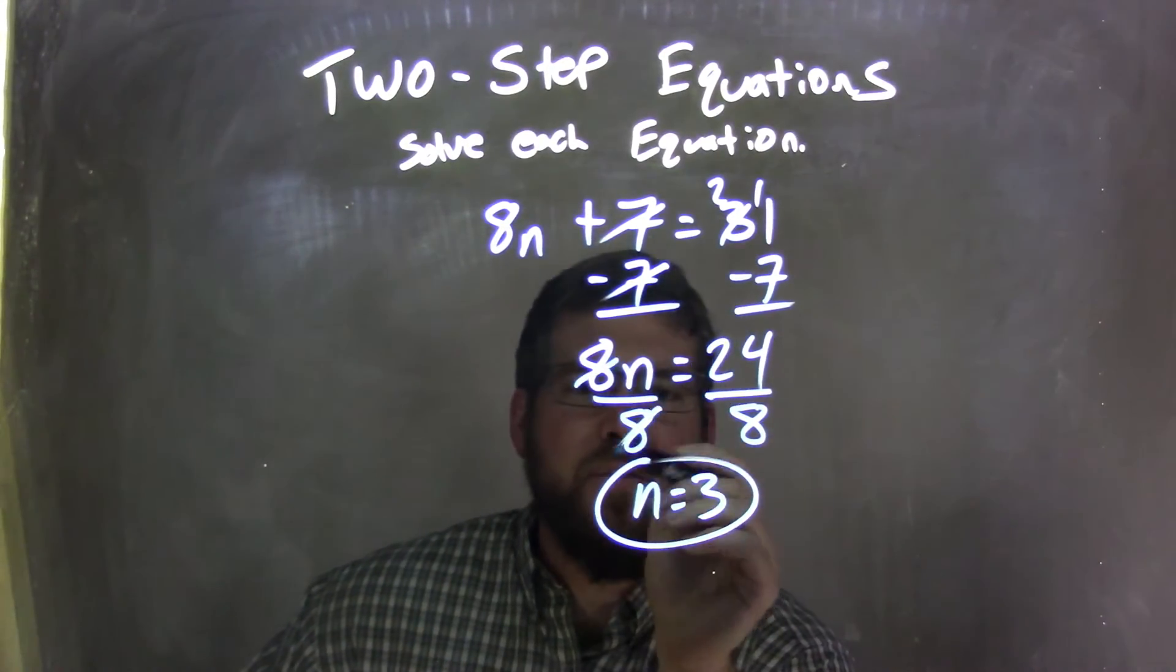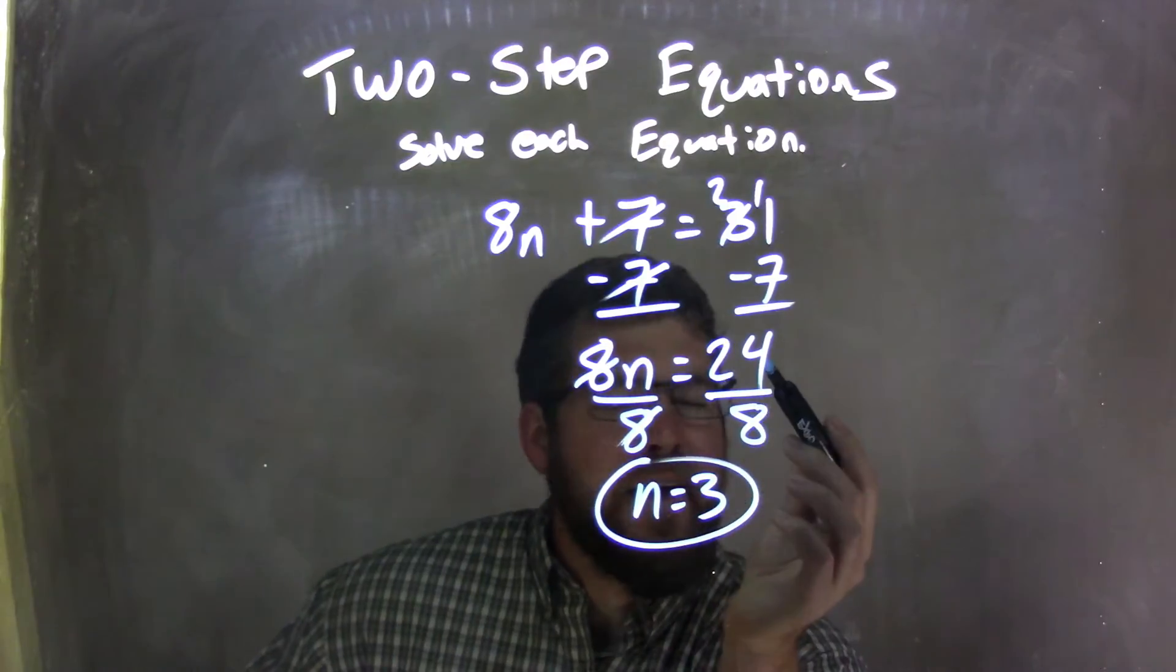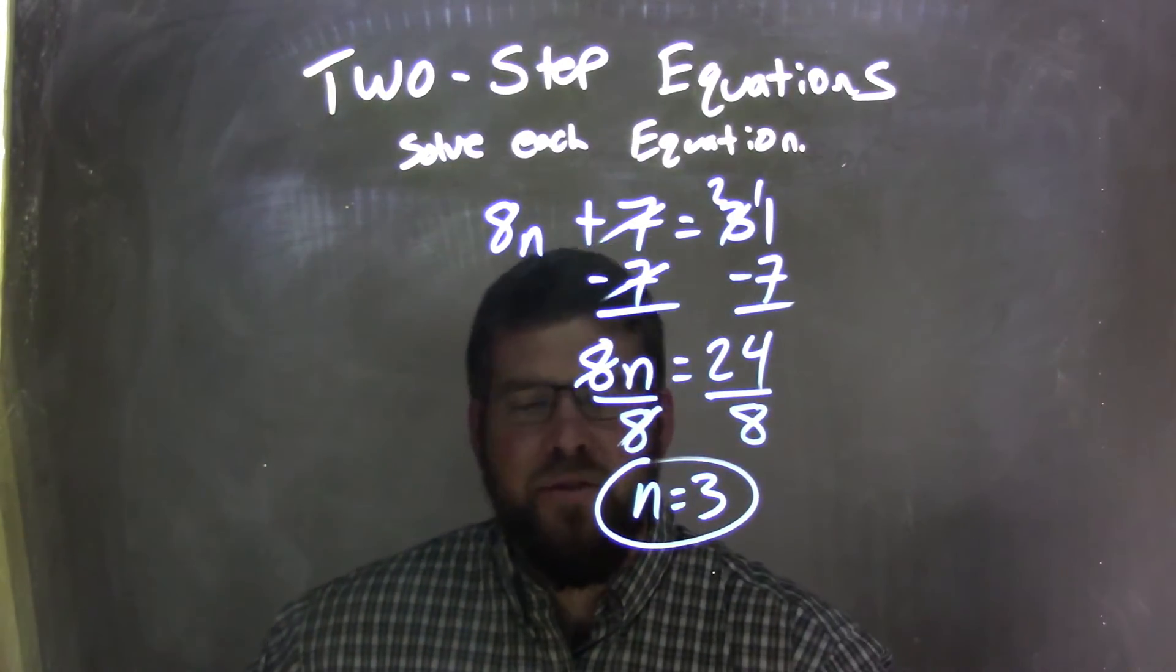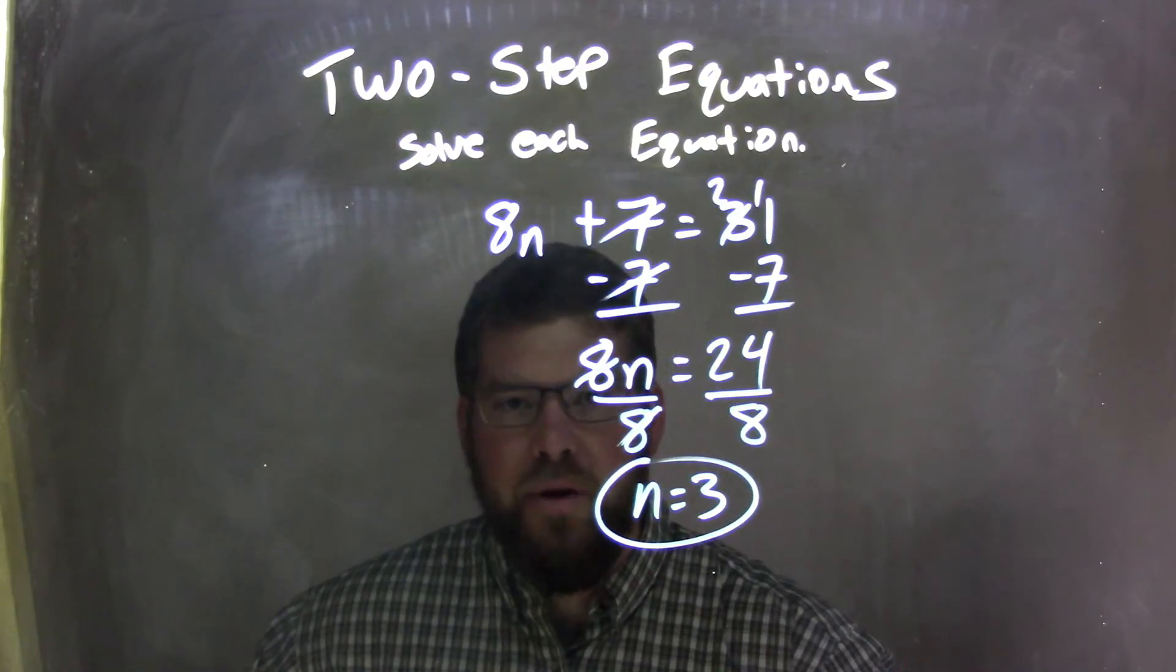So, divided 8 to both sides, these 8s would cancel, leaving me just n. And 24 divided by 8 is 3, giving my final answer of n equals 3.